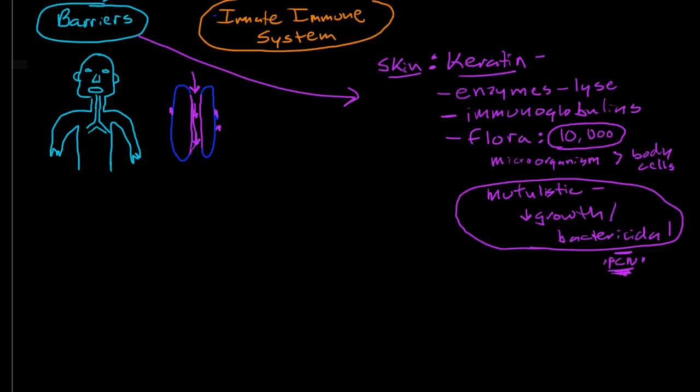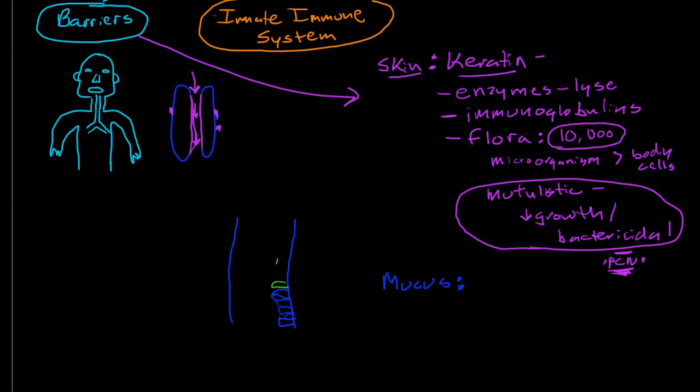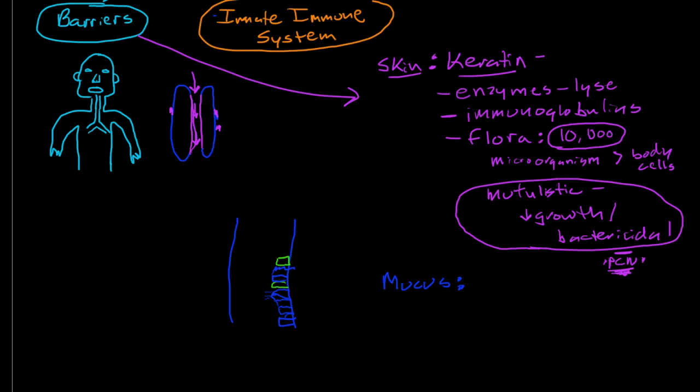The next big category of our barrier defenses are the mucous membranes. A good example is the trachea. If you look at a cross section of the trachea, we have this pseudostratified columnar epithelium interspersed with occasional goblet cells.